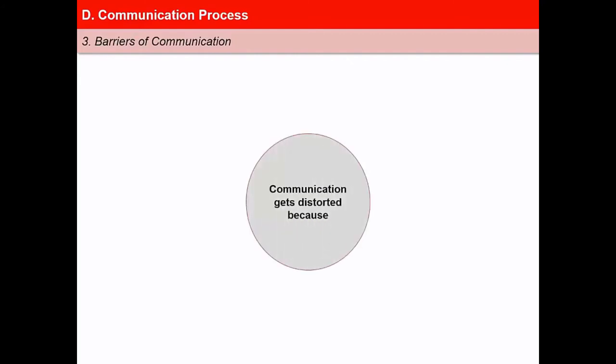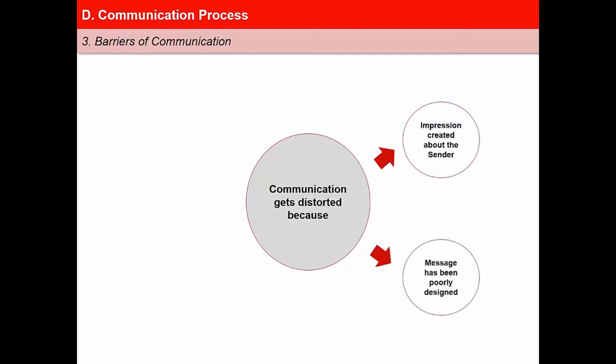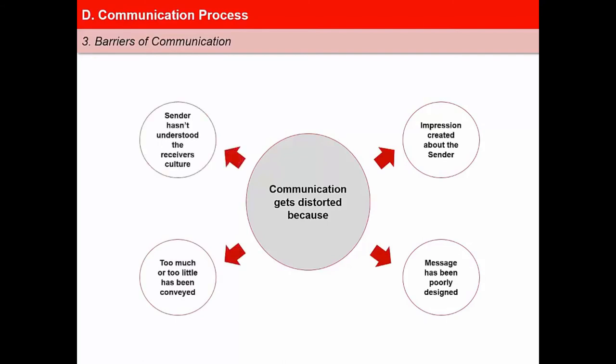In the process of communication, there are some barriers that can arise at each step. Communication can get distorted because of the impression created about the sender, or because the message has been poorly designed, or because too much or too little has been conveyed, or because the sender has not understood the receiver's culture.